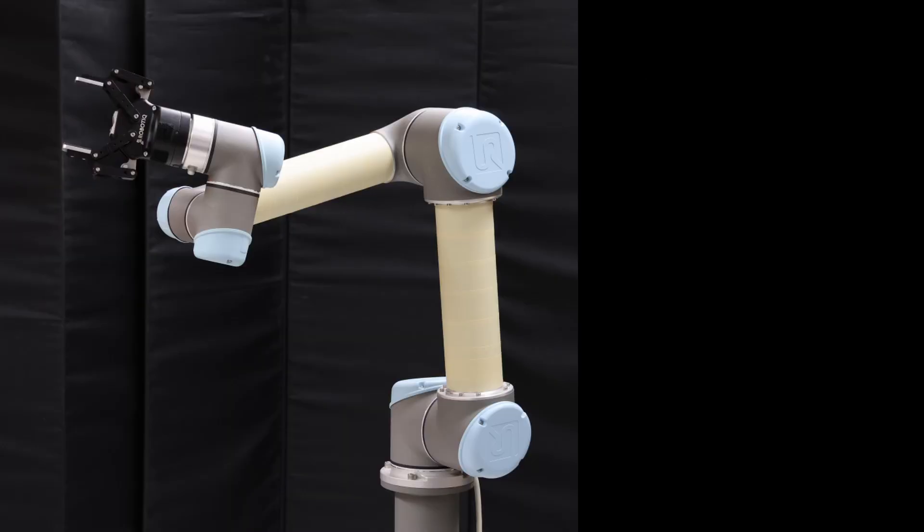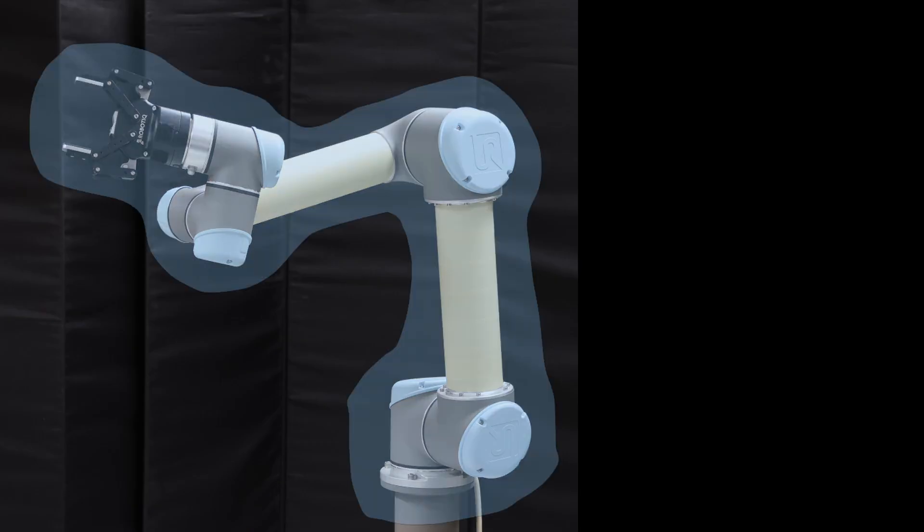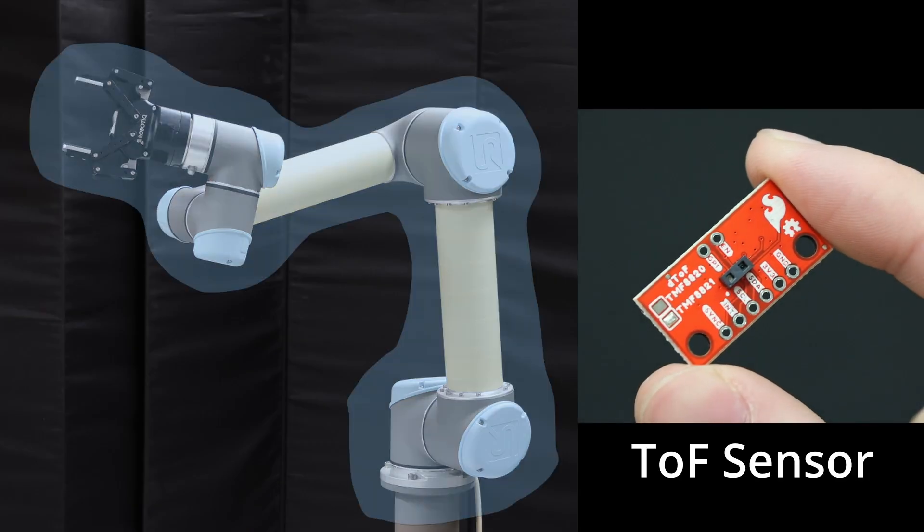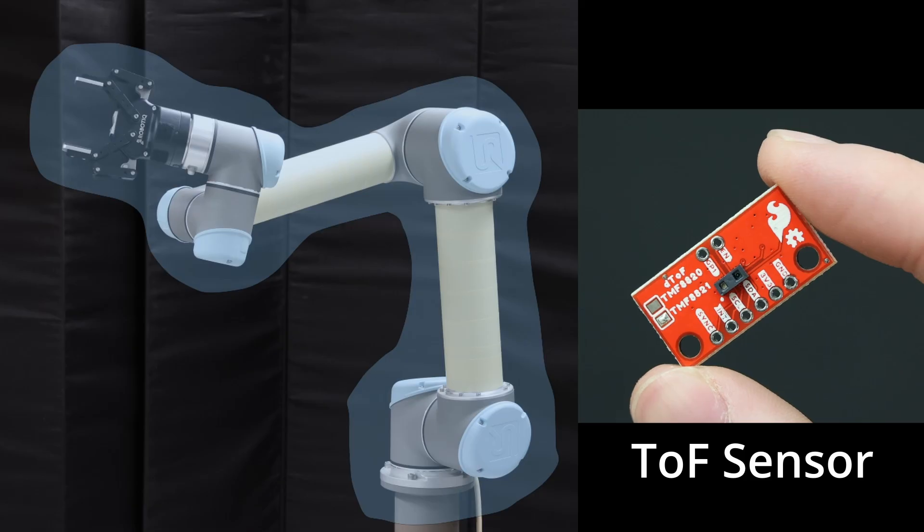In this work, we provide a method for detecting and localizing objects near a robot arm using arm-mounted miniature time-of-flight sensors, like the sensor shown here.